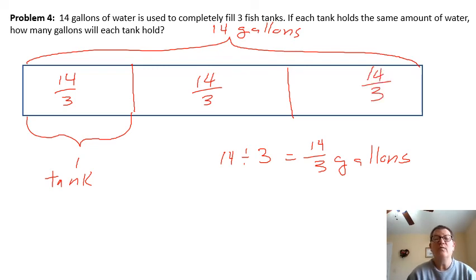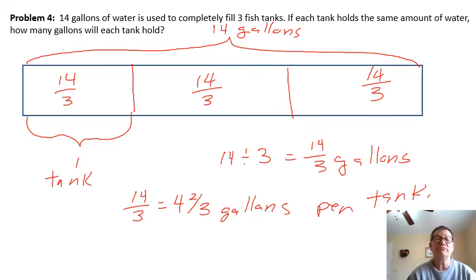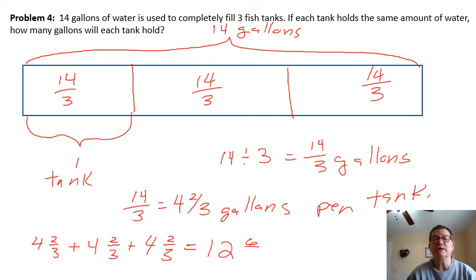I know fourteen-thirds is not how I would say gallons, but I know three goes into 14 four times, because three times four is 12, leaving me two left over. So it'll be four and two-thirds gallons per tank. To check this, we add four and two-thirds three times. I have three fours, so four times three gives me 12 for the wholes. And I got two-thirds plus two-thirds plus two-thirds, which gives me six-thirds, which is 12 plus two, which equals 14. So it checks.